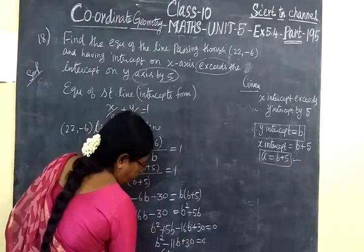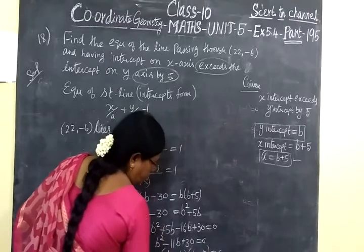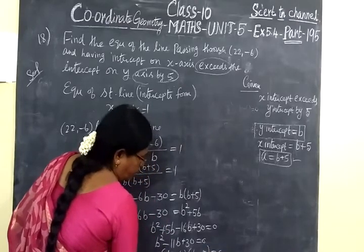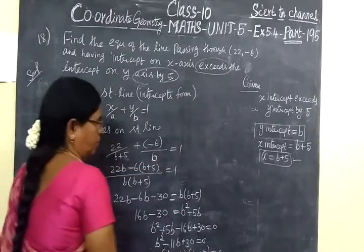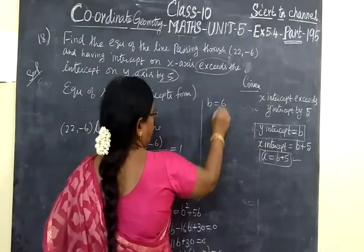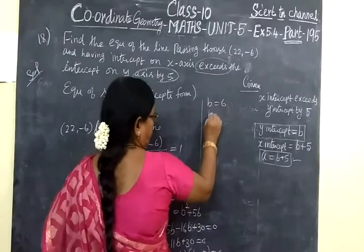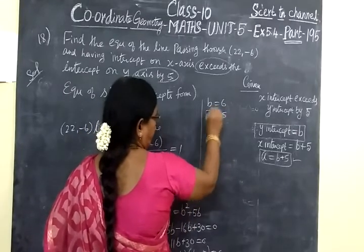Factoring: (B minus 6)(B minus 5) equals 0. This gives us -6 minus -5 equals -11 for the middle term, and minus times minus gives plus 30. So we are taking B equals 6, or B equals 5.